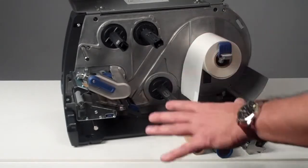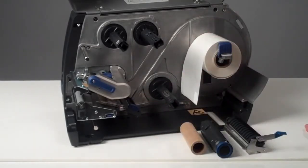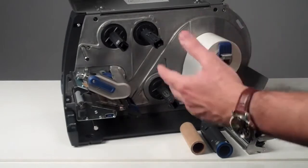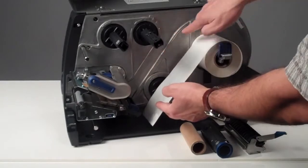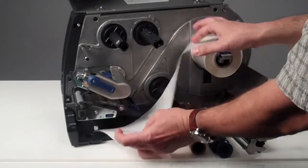The Intermec PM43 comes with a variety of different ways to rewind the liner and peel off or dispense the labels. To wind the label and the liner in is very easy. I'll show you the different ways to do this.